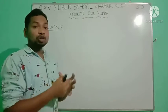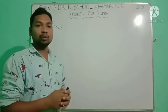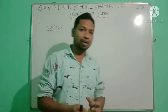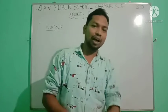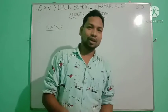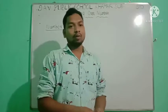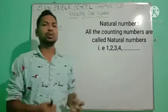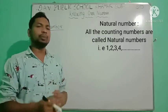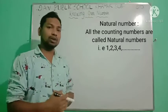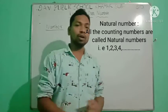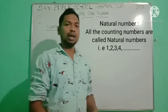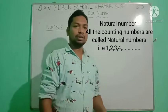The numbers which we are using for counting are called natural numbers. What is a natural number? The numbers which we are using for counting are called natural numbers. Counting numbers are also called natural numbers.